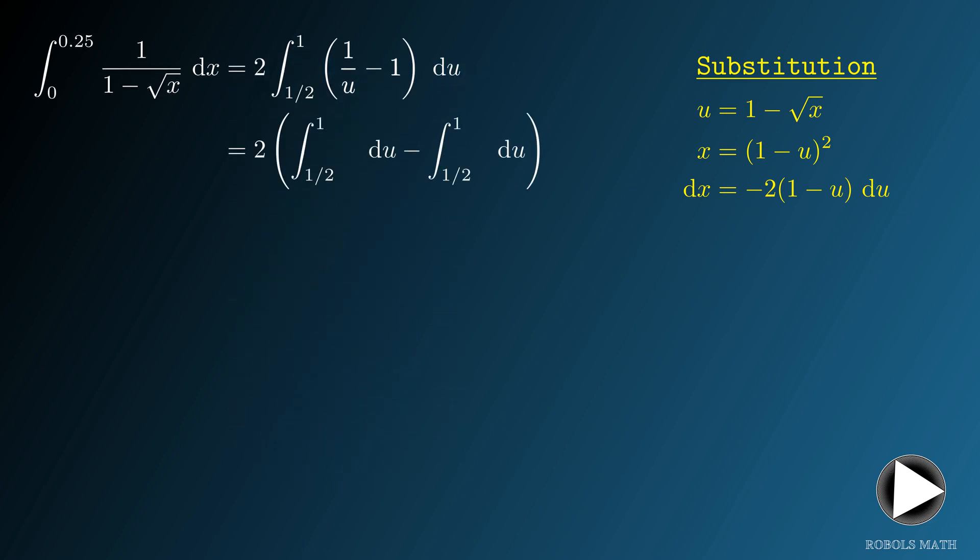And now we're just left with simple integrands. The antiderivative of 1 over u is ln of u, while that of 1 is simply u. Apply the limits of integration, simplify using properties of logarithms, and we'll have our answer.